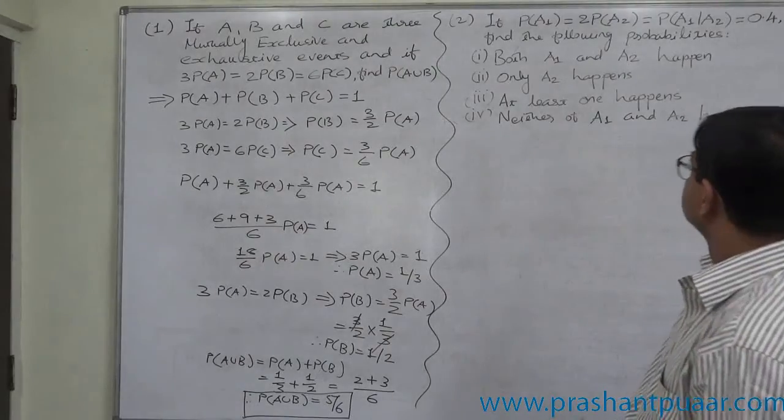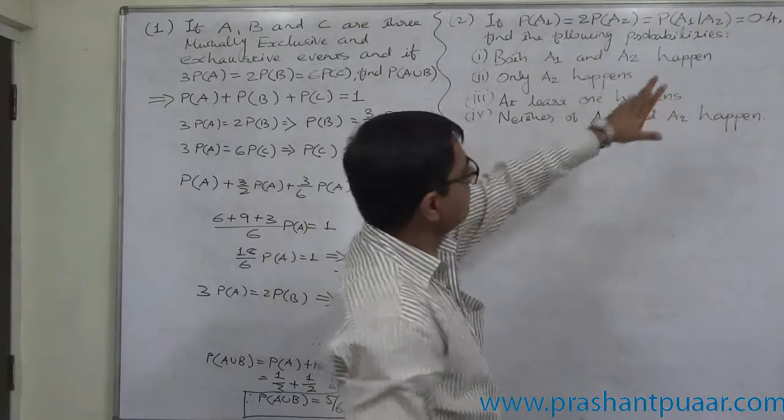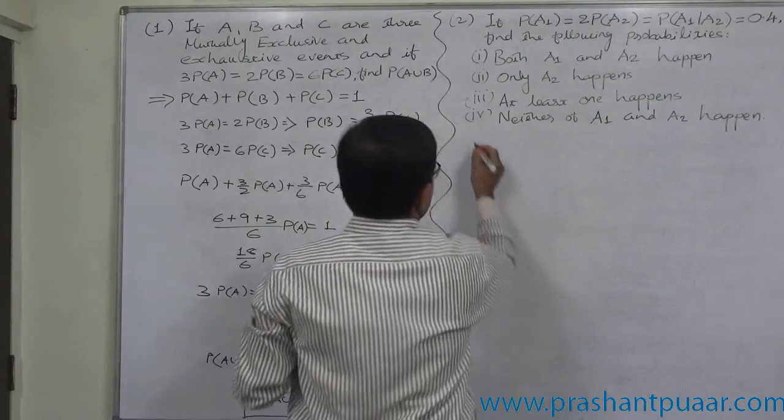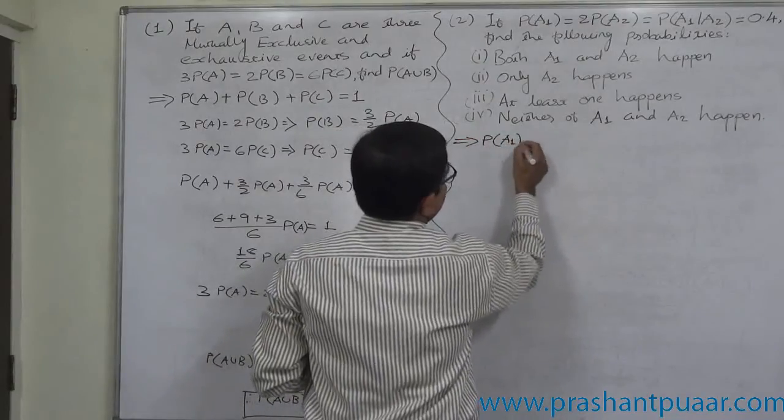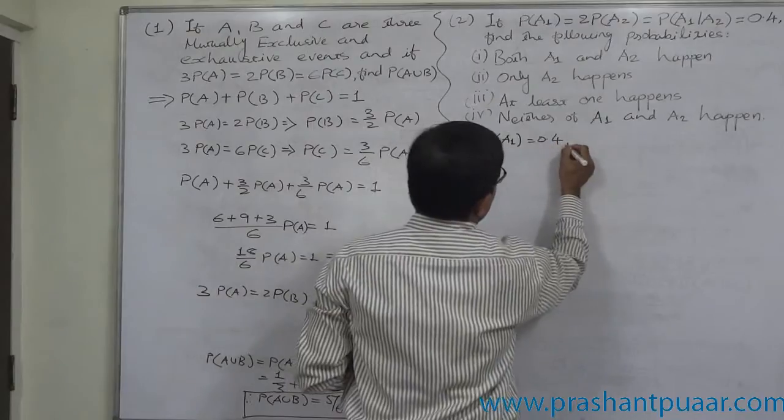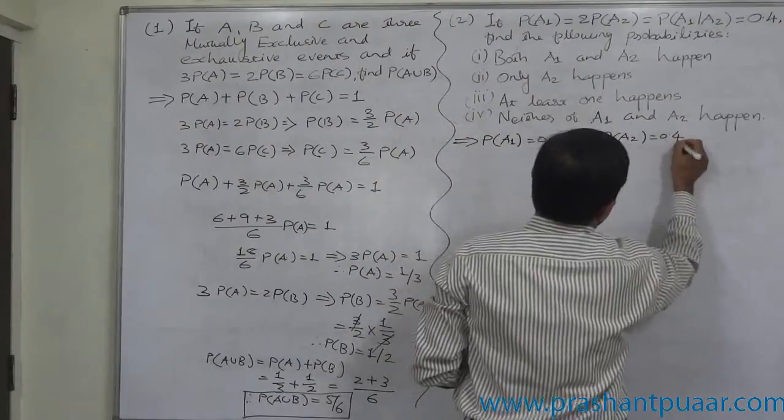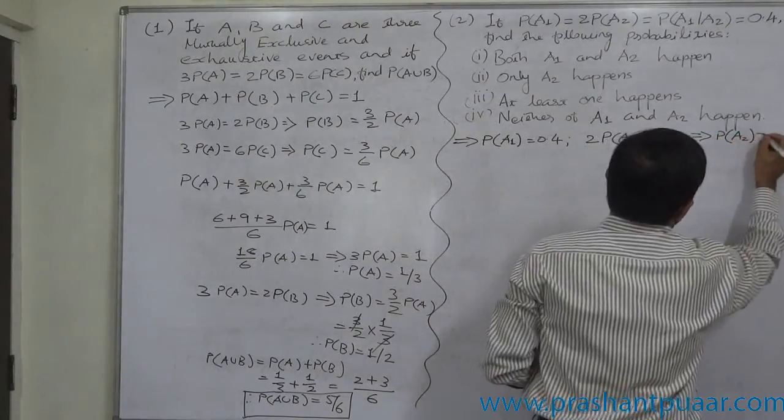Now, this case, a simple case, but again there is a relationship, but that relationship is with 0.4. P of A1 is 0.4, 2P of A2 is 0.4, that means P of A2 will be 0.2, 0.4 divided by 2.